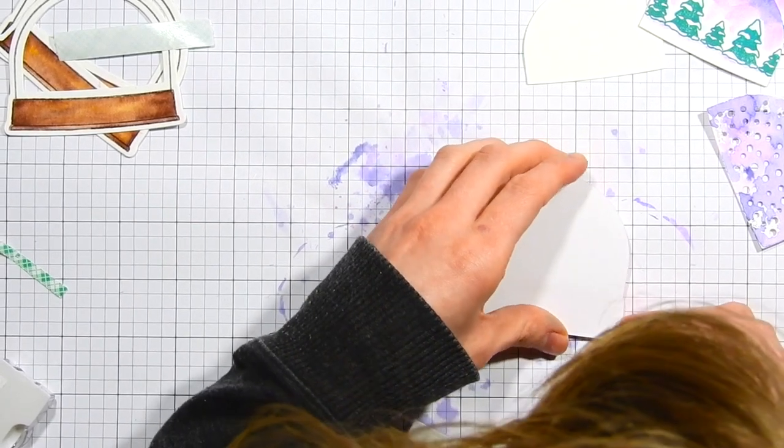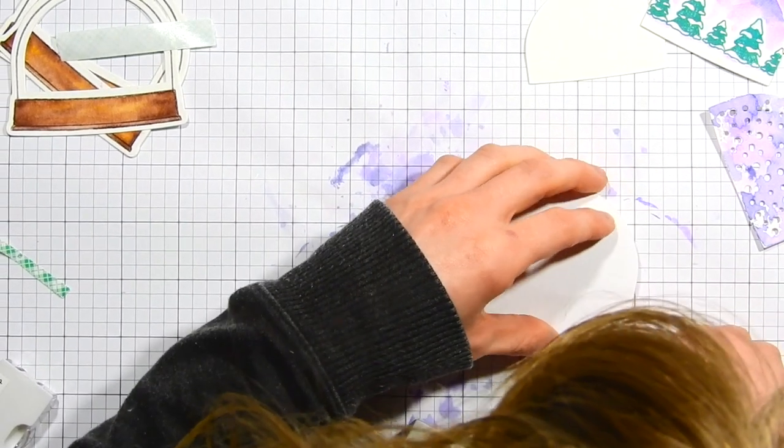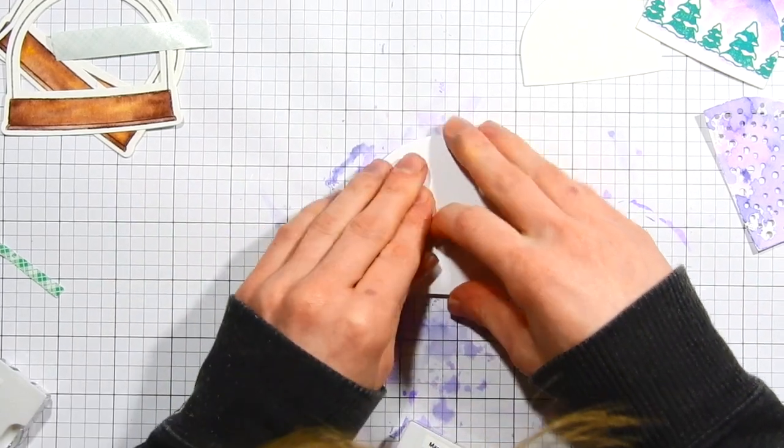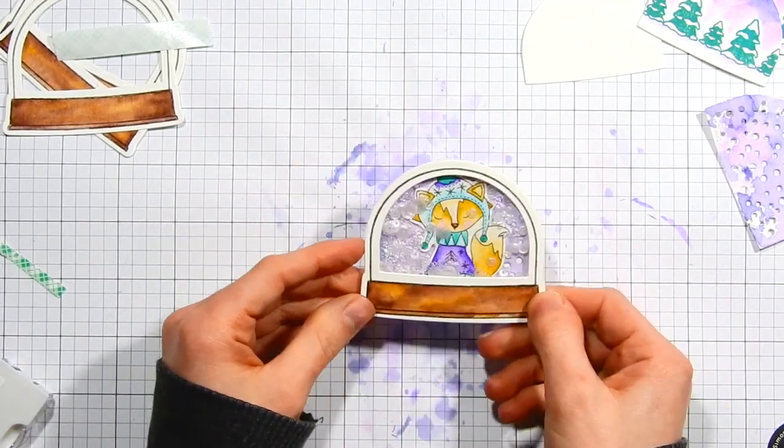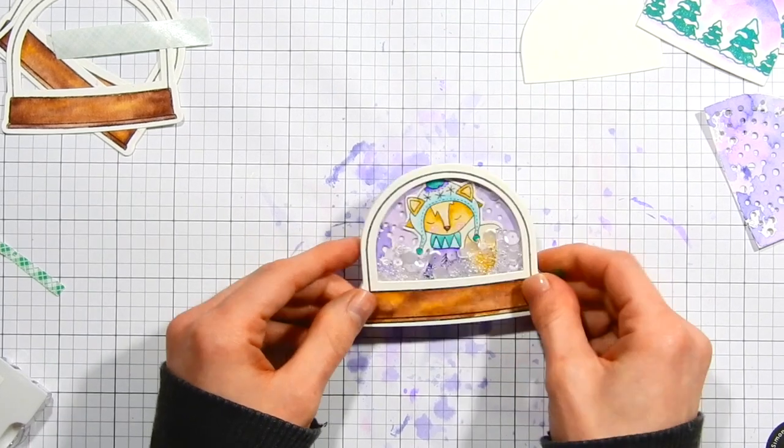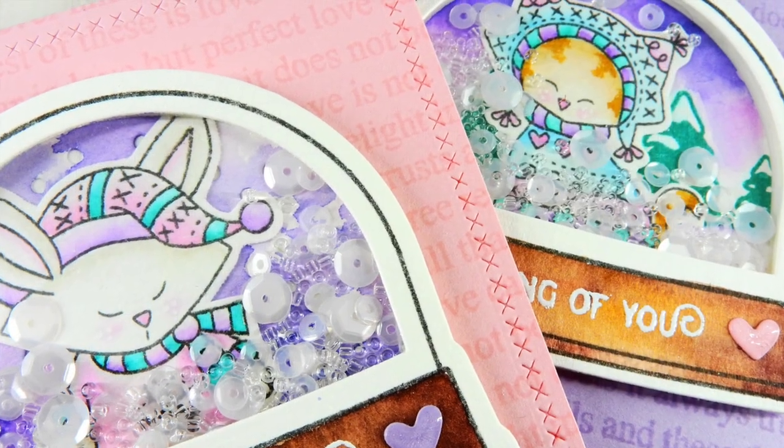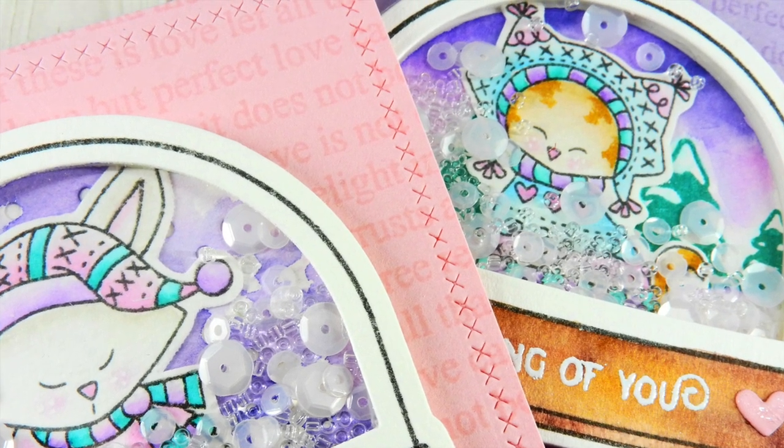I added some sequins and seed beads to the inside of my shaker. Those are sequins and seed beads from Pretty Pink Posh and I'm just going to adhere the shaker backing that has our little critter attached to it on top of our little snow globe shaker here. I'll press it down after I've lined it up really good and you can see how fun and adorable these shakers are. You could add all sorts of different things inside of these shakers but I really love the look of the sequins and the beads.